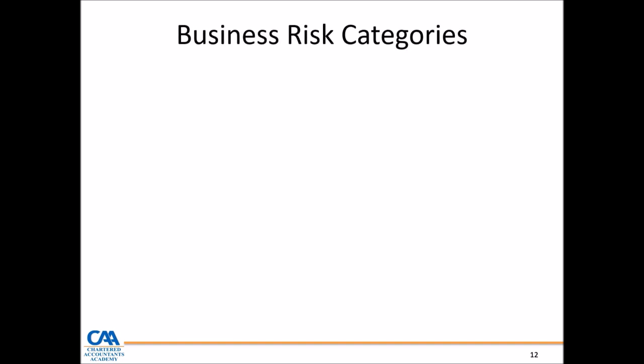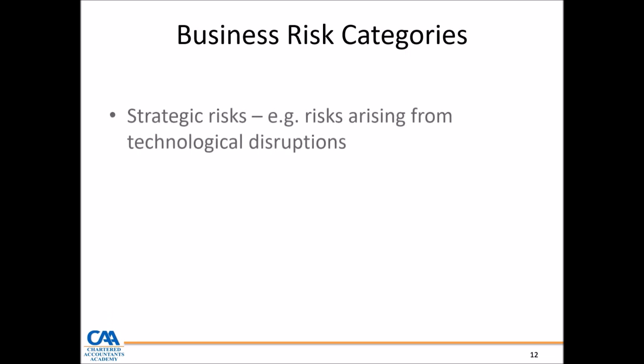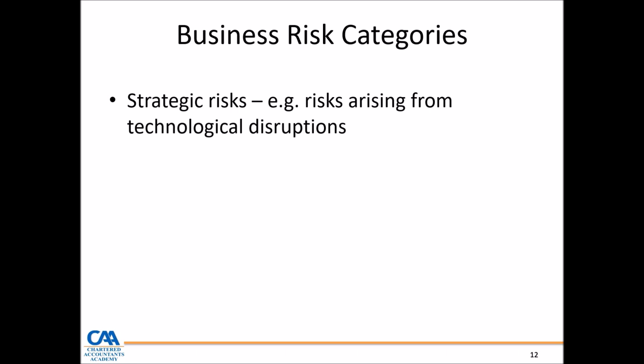From a business risk category, you need to know the various types of business risks an entity can be exposed to. Strategic risks normally arise from the strategic direction a company has taken. As an example, risks can arise from technological disruption — a classical example is Uber, the taxi-hailing service. When they came in, they disrupted traditional metered taxis, affecting a whole industry. That's a strategic risk.